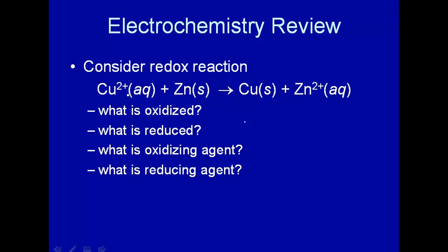What's the oxidizing agent? That's what causes something to be oxidized by itself being reduced. So Cu²⁺ is the oxidizing reagent. It oxidizes zinc to Zn²⁺ by accepting two electrons and it itself is reduced. And what's the reducing agent? Well, that would be zinc because zinc reduces copper to copper solid by giving it two electrons and it itself then becomes oxidized to Zn²⁺. That should sound familiar from introductory chemistry.